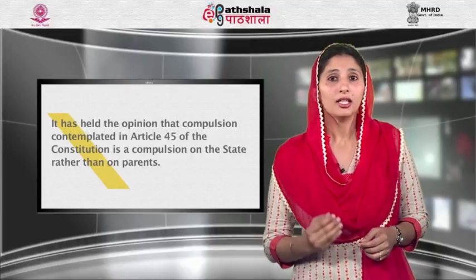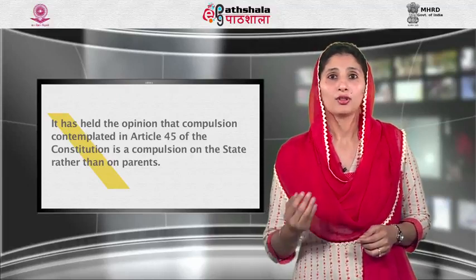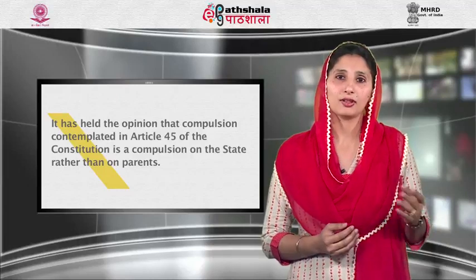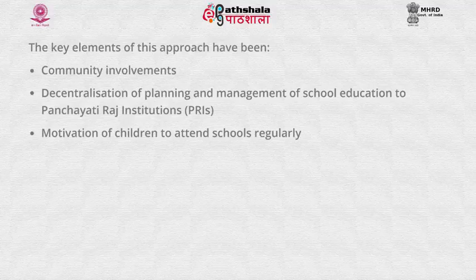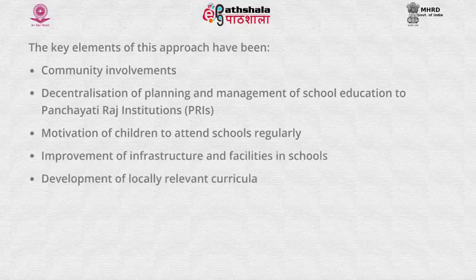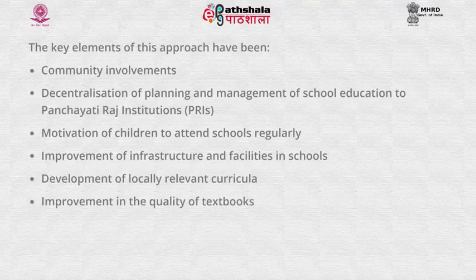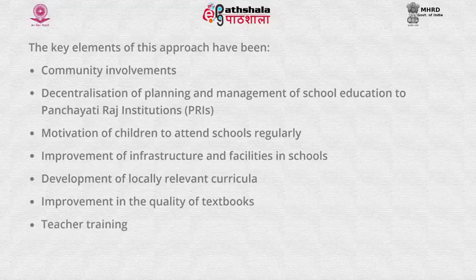There has been no effort to remove the anomalies in the act even in its 1995 amended version. The compulsory education legislation as enacted in 14 states and 4 union territories has remained unenforced due to various socio-economic and cultural factors as well as administrative and financial constraints. The government of India has therefore been advocating a consensual approach to motivate parents and children, whose key elements include community involvement, decentralization of planning to Panchayati Raj institutions, motivation of children to attend school, improvement of infrastructure, development of locally relevant curricula, improvement in quality of textbooks, teacher training, and child-centered learning.